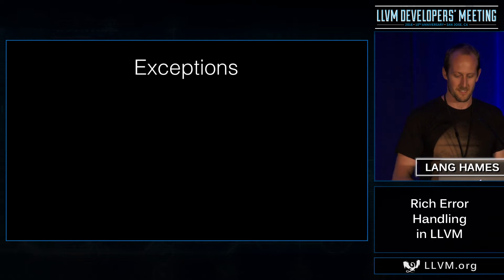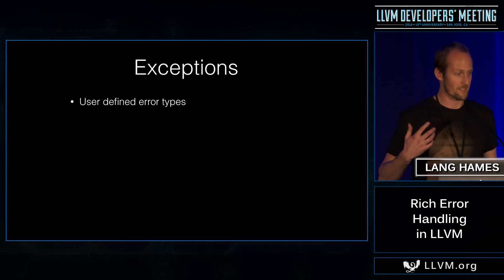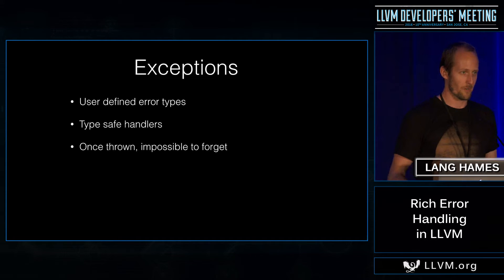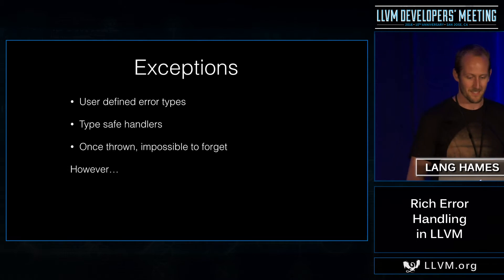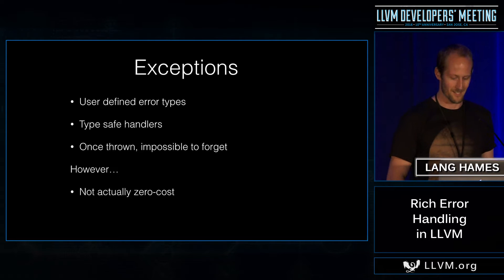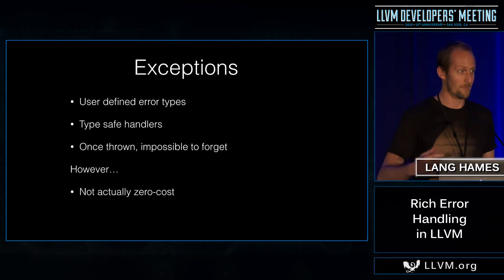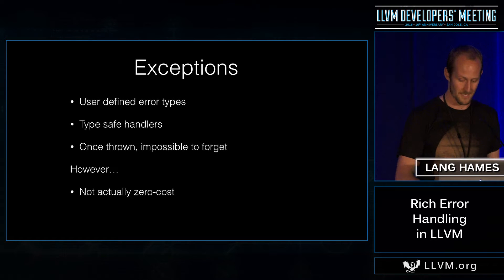C++ has an answer for this, and it's exceptions. You can describe your errors with user-defined types in arbitrary detail, use type-safe handlers to catch those errors, and once you've thrown an exception, you can't forget to deal with it. But they are not zero-cost as advertised. They increase binary size because of extra metadata, and they change your control flow everywhere because they're opt-out rather than opt-in. So for that reason, they're turned off in LLVM.